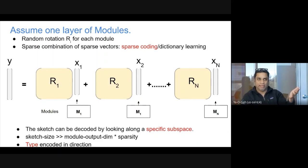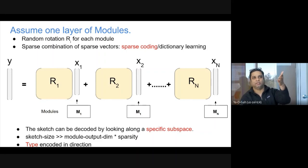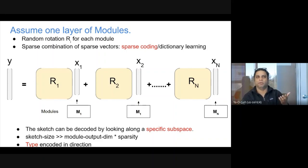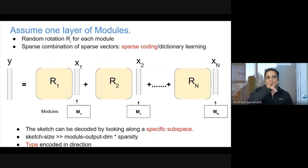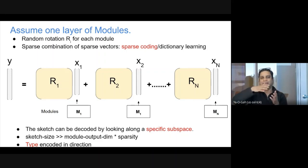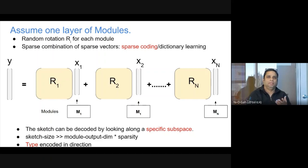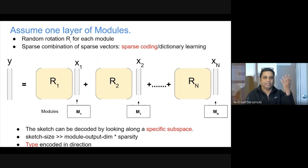One simple way to check if a particular module has fired: multiply the sketch Y with RI inverse — or rather RI transpose, which is close to the inverse because it's a random matrix. If that product has a high value, you know that module has a non-zero input approximately equal to XI. If it doesn't have a high value, then you know it's zero. This is a very simple idea to do sketching using sparse encoding.